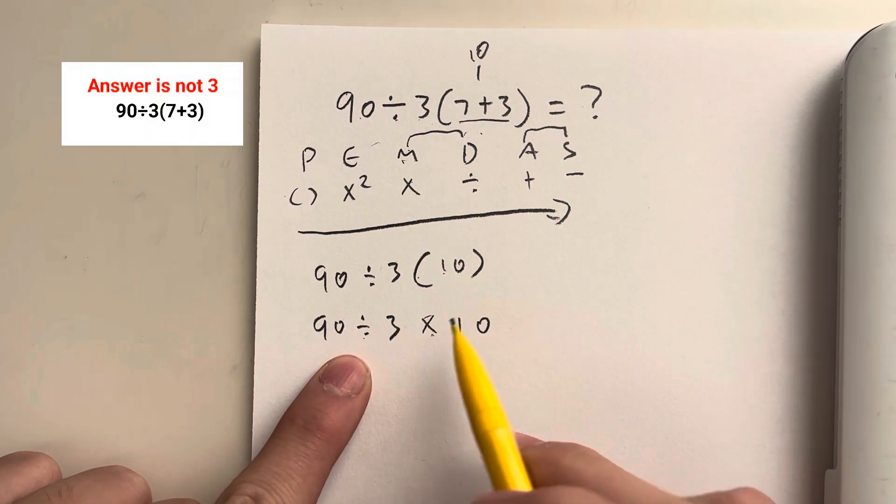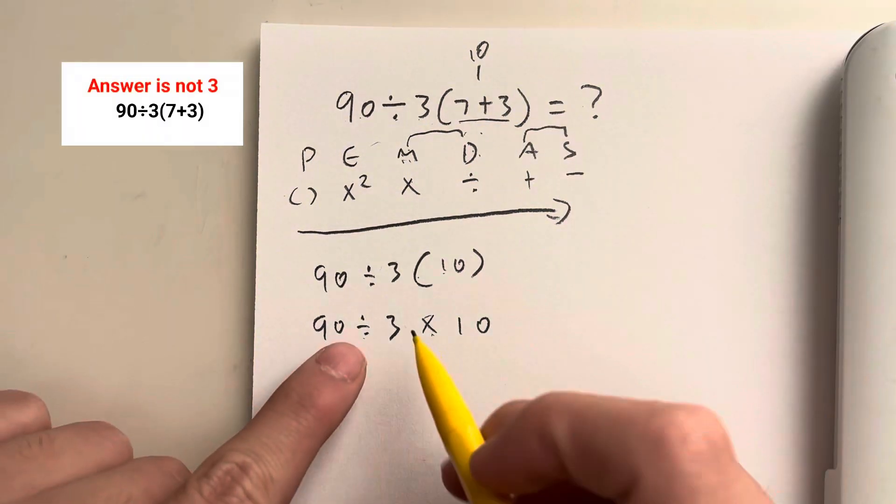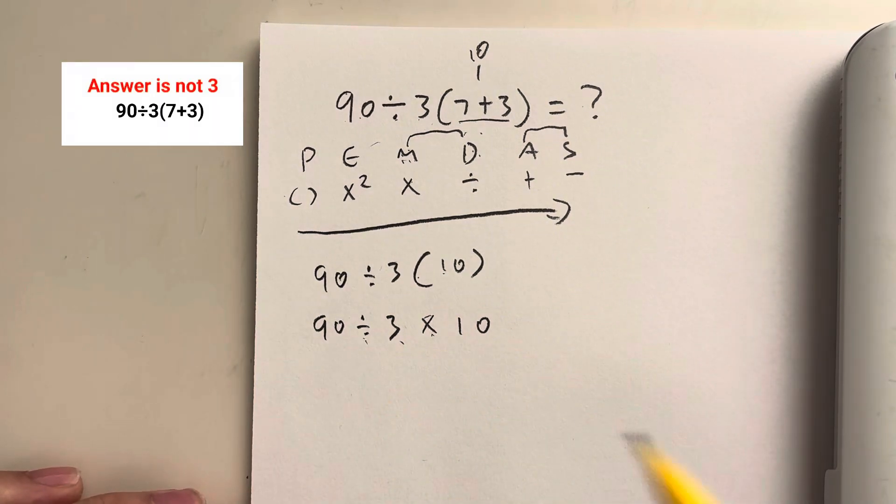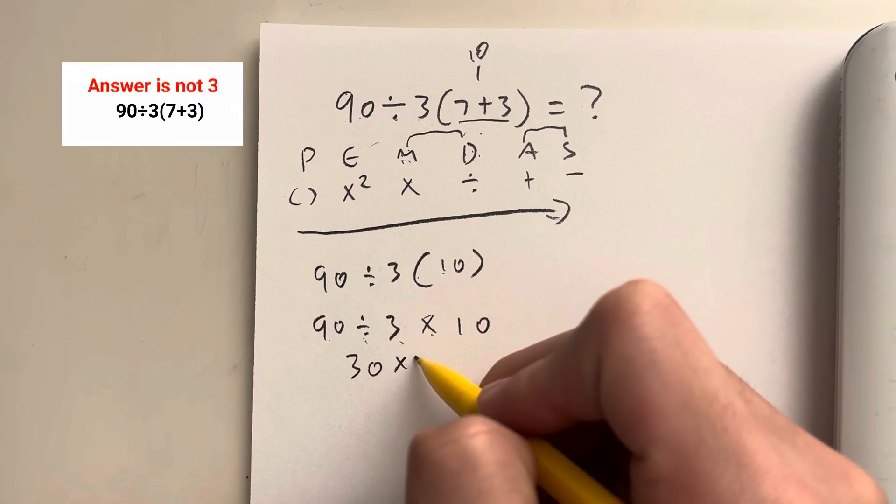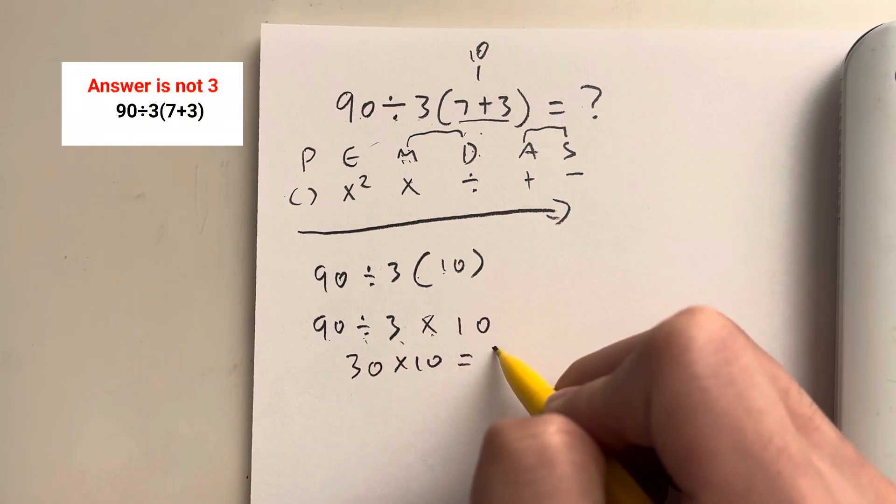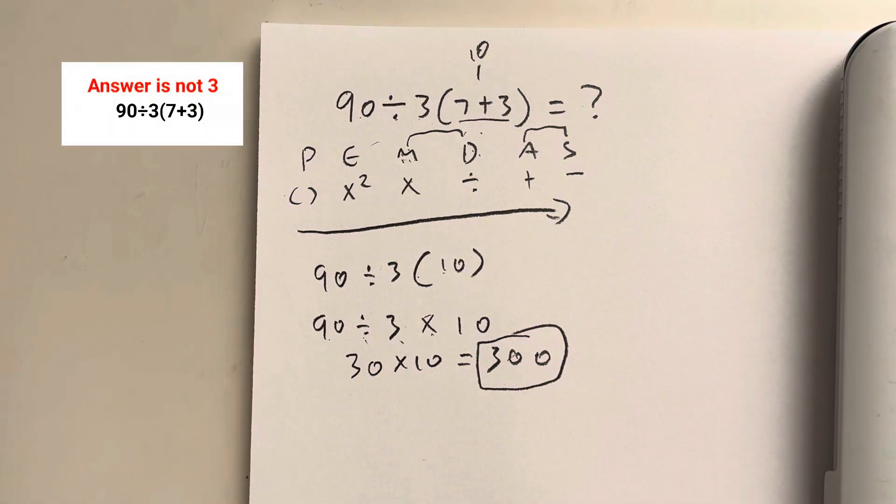And now what do I see? I see division and multiplication. As I said before, multiplication and division come left to right, how you see it. So in this case, I see division first, so that's what we have to do first. So we have 90 divided by 3, which is just equal to 30, and 30 times 10, which is just equal to 3 followed by two zeros. So the answer to this question has to be 300. Did you get it right?